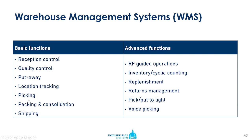Packing and consolidation is another basic function. Imagine a warehouse with different temperature areas — ambient and cold. If an order contains items from both areas, two pickers are assigned: one goes to the cold area and one to the ambient area. Both end up in a consolidation area where the items picked from the different areas are brought together, packed, and eventually shipped.